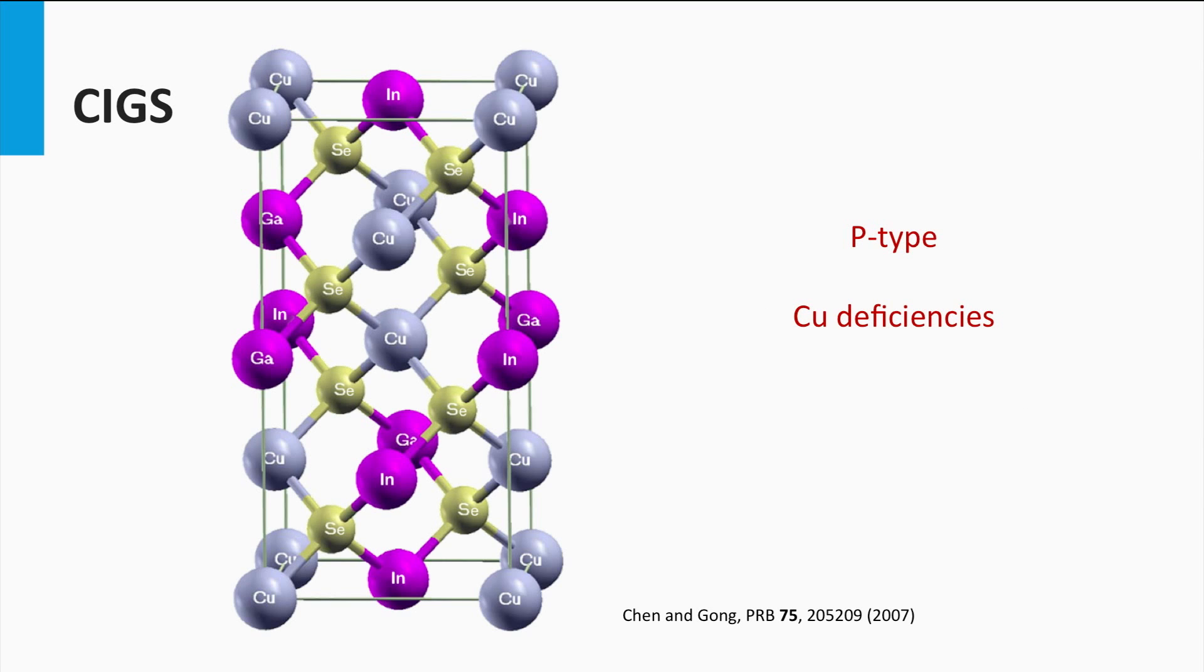The CIGS absorber layer is a p-doped layer. The doping is a result of intrinsic defects in the material, related to copper deficiencies. These vacancies officially act as an acceptor. It means electrons excited from the valence band can get easily trapped. As a result, the holes become the majority charge carrier density.